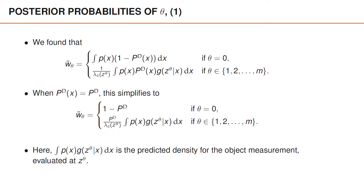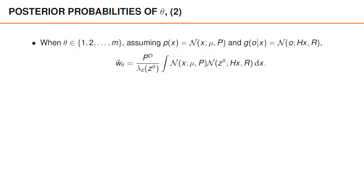The integral over P of x times g of z-data given x can be thought of as the predicted density of the measurement evaluated at z-data. This has the same form as the Chapman-Kolmogorov equation, with the minor difference that we have replaced the motion model Pi with the measurement model G. To obtain the final expression, we need to simplify this integral over P times g. Given our linear and Gaussian assumptions, we get that the unnormalized weight when theta is greater than 0 is Pd divided by the clutter intensity function at z-data, times an integral over a Gaussian density with mean mu and covariance p evaluated at x, times another Gaussian density with mean Hx and covariance R evaluated at z-data, integrated over all values of x.